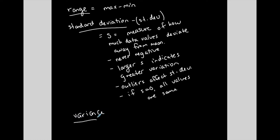And the last measure of variation that you're going to find is the variance, which is basically just the standard deviation squared. So to find your variance, you need to find your standard deviation.